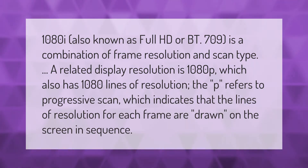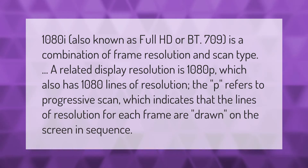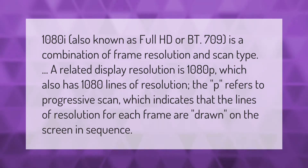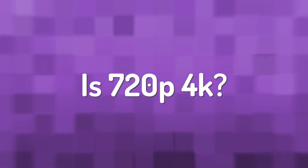1080i, also known as Full HD or BT.709, is a combination of frame resolution and scan type. A related display resolution is 1080p, which also has 1080 lines of resolution. The 'p' refers to progressive scan, which indicates that the lines of resolution for each frame are drawn on the screen in sequence.